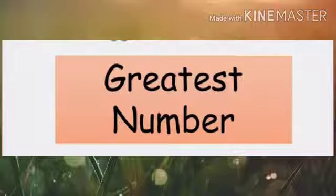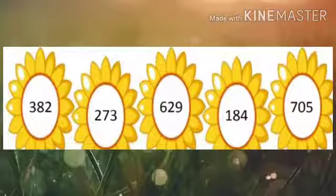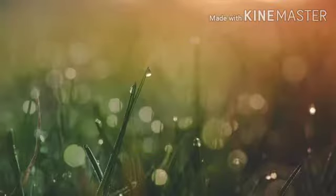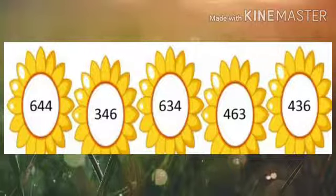Now we will learn how to find the greatest number in three digit numbers. Here we are having numbers 382, 273, 629, 184 and 705. To find out the greatest number, let's see the digit on the 100th place first. Here 3, 2, 6, 1 and 7 are on the 100th place. Here we can see 7 is the greatest digit. So the number 705 is the greatest number. Let's take one more example.